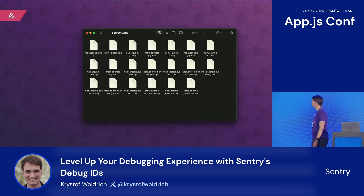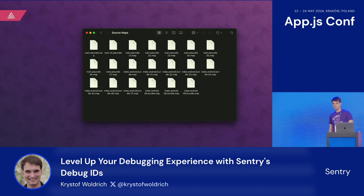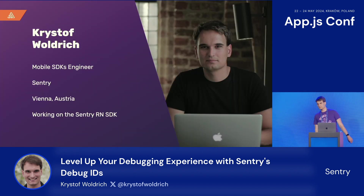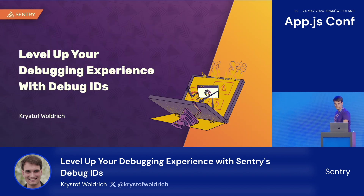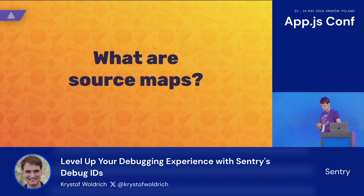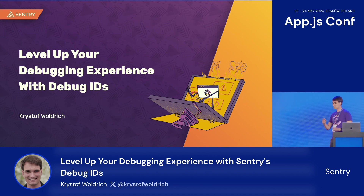I could try one after the other until some symbolication looks decent and start debugging from that, but that would take forever. My name is Christoph. I work at Sentry at the Vienna office, and I maintain the React Native SDK. The name of my talk is: leveling your debugging experience with debug IDs — that's the solution to my source map problem.